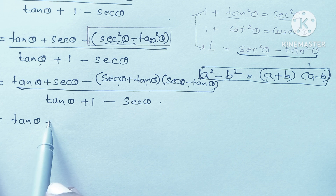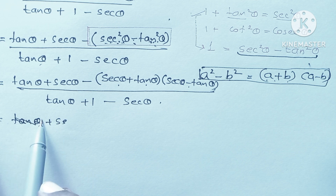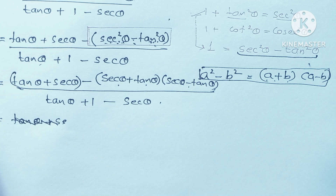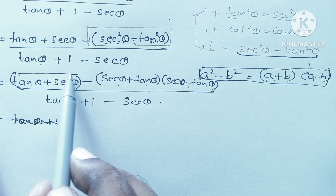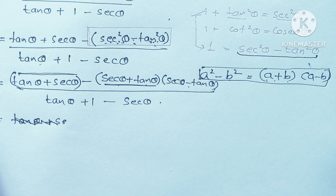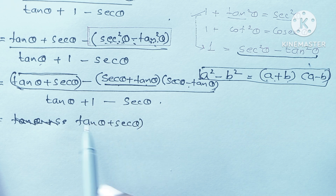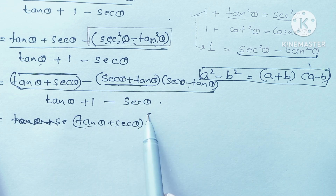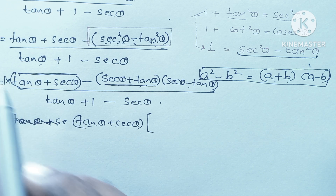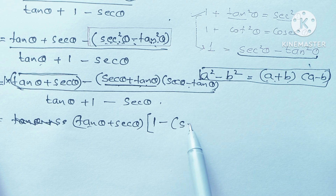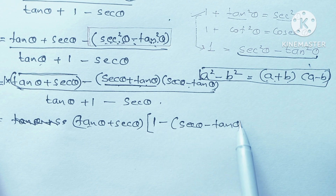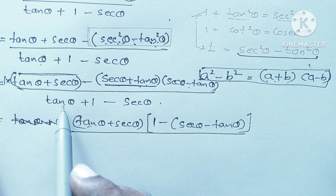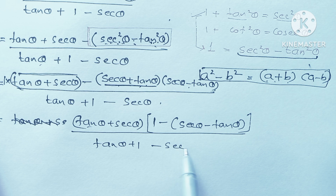Now look at the numerator: tan θ + sec θ appears in the first term, and also sec θ + tan θ appears in the factored term. That means in the numerator we can take (tan θ + sec θ) as a common factor. So tan θ + sec θ is common in both terms. If we take it as common, what remains is 1 minus (sec θ - tan θ), divided by tan θ + 1 - sec θ.